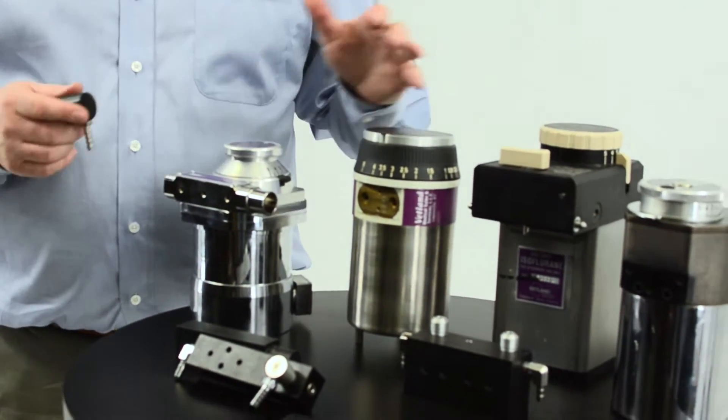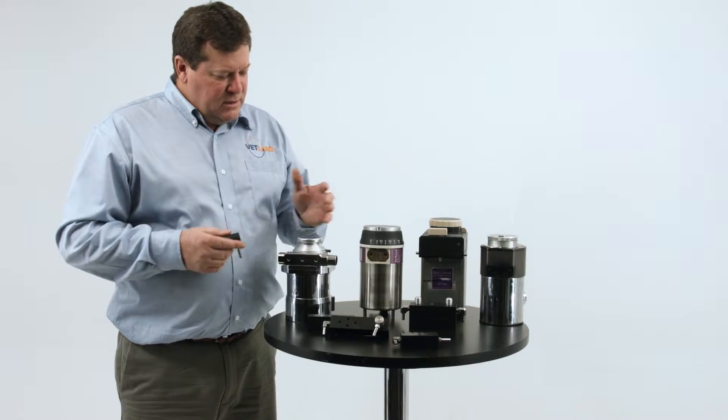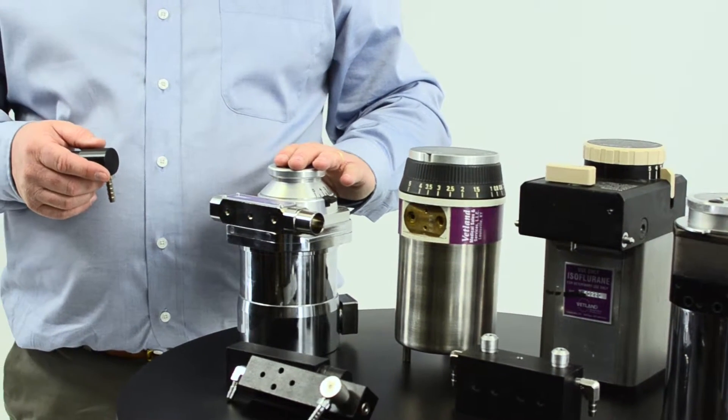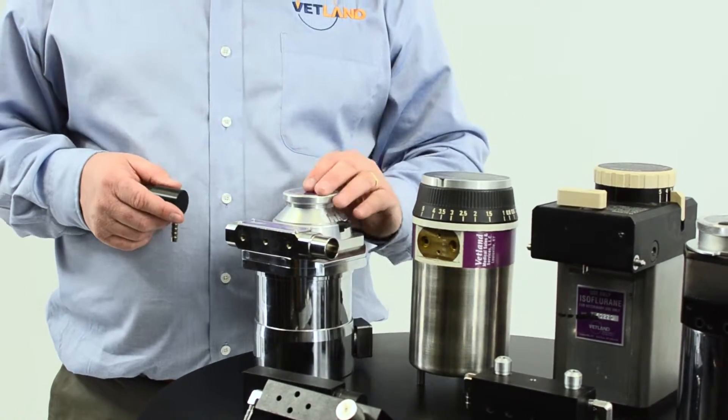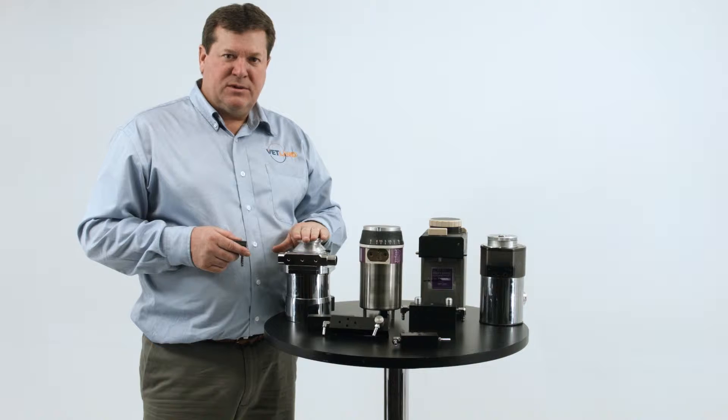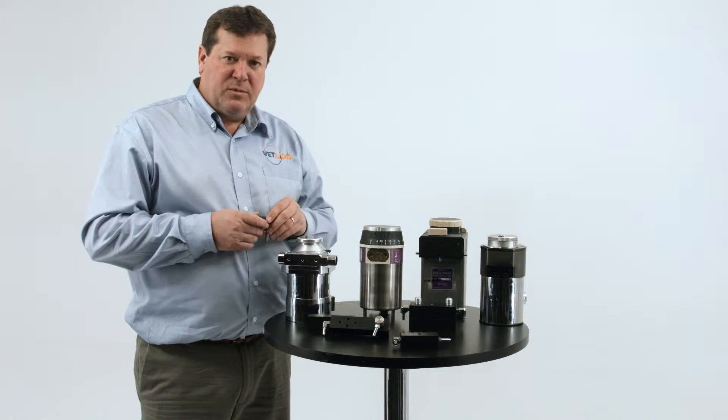Every vaporizer has to have an interface between the vaporizer and the anesthesia machine. On the TEC-3 vaporizer, that manifold or interface is actually built in. It's part of the vaporizer. So if you purchase this vaporizer, it's not necessary to purchase an additional manifold.